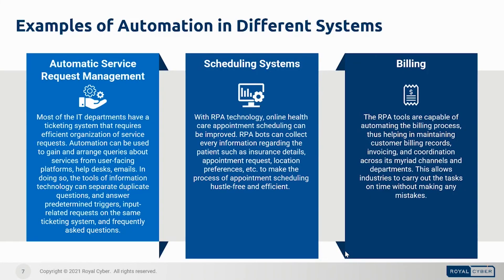Here are some automation examples in different systems. Automatic Service Request Management — automating self-service can significantly reduce the workload on your IT team and free up time for service desk agents to focus on more strategic tasks. Scheduling Systems — bots can be scheduled to collect data from various systems and process it. Billing — RPA tools let users automate processes such as billing records, generating invoices, and carrying out other specified tasks.